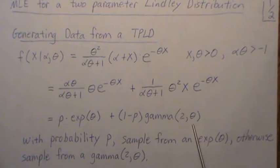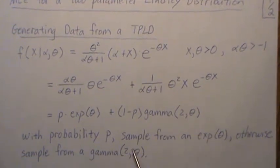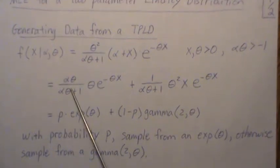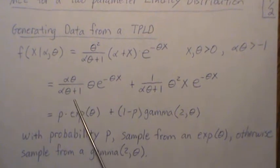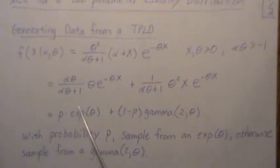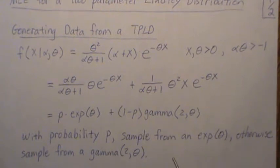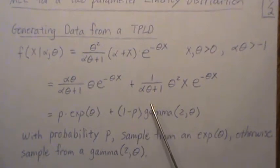That's how you generate data. You randomly generate a number between zero and one, and if that number is between zero and p, determined by alpha and theta, we generate from an exponential distribution. If it's not, we generate from a gamma distribution with two and theta. That's how you generate data from a two-parameter Lindley distribution.